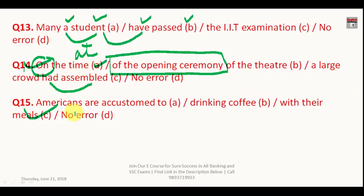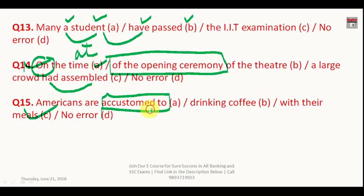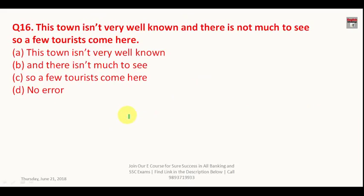Question number fifteen: 'Americans are accustomed to drinking.' Always remember that 'accustomed to' is a prepositional phrase and prepositional phrases are followed by the '-ing' form of the verb. So this sentence is correct and the answer is D.